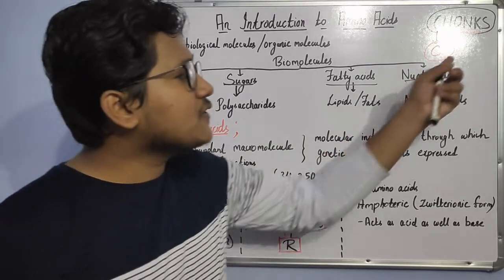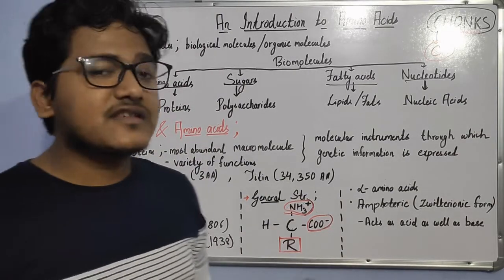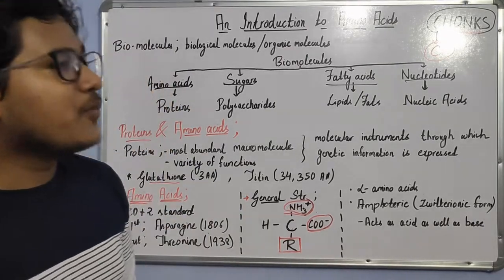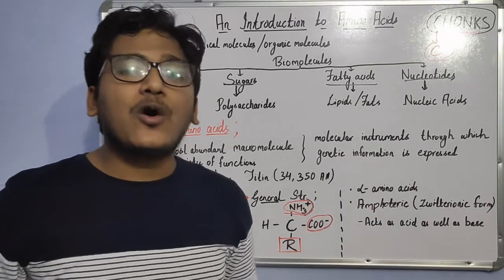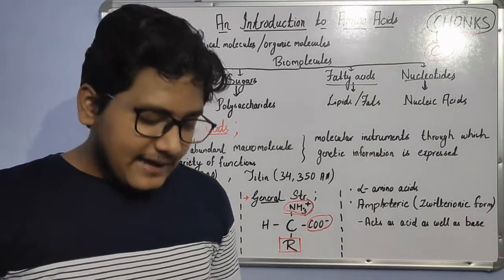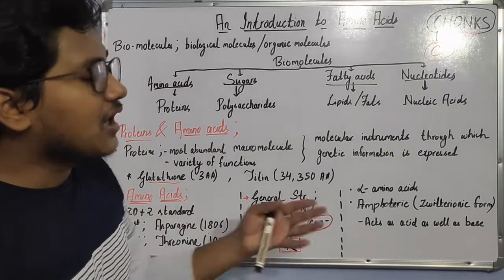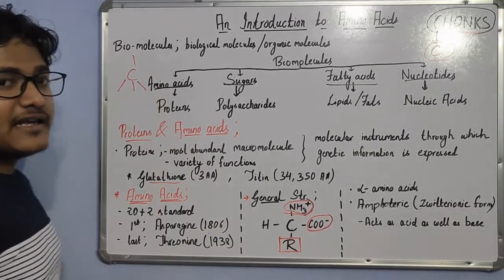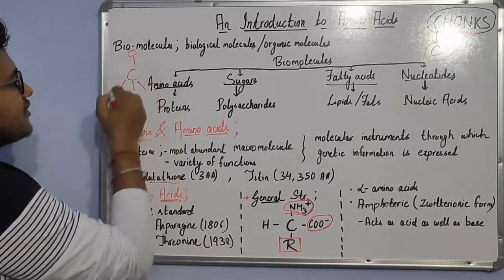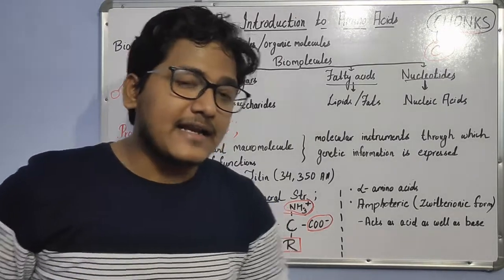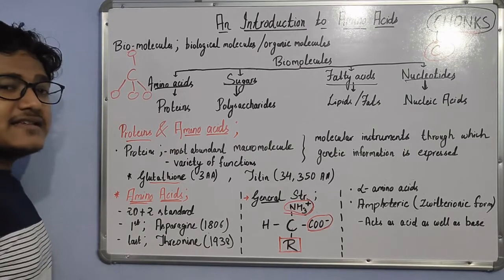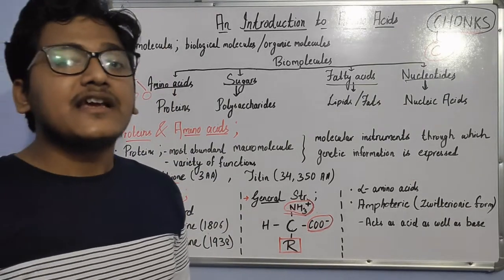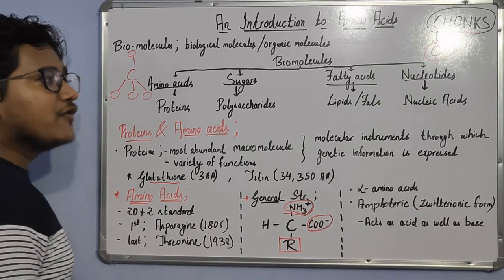Carbon also has four electrons in the outermost shell, as a result of which carbon can form four bonds. These four positions can be occupied by four different functional groups, and these functional groups regulate the function of carbon compounds. In chemistry, it is said that which functional groups are present and their 3D arrangement defines the function of any chemical compound.